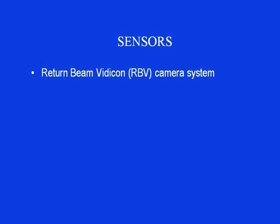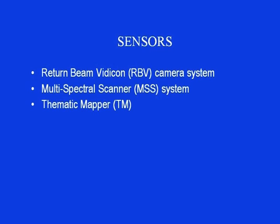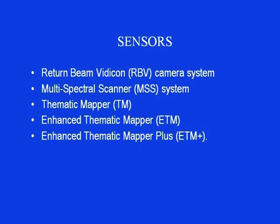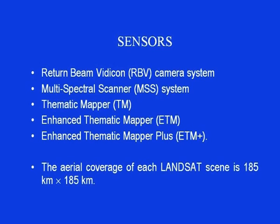The various types of sensors carried by Landsat missions include: Return Beam Vidicon (RBV) camera system, Multispectral Scanner (MSS) system, Thematic Mapper (TM), Enhanced Thematic Mapper (ETM), and Enhanced Thematic Mapper Plus (ETM+). The area coverage of each Landsat scene is approximately 185 kilometers by 185 kilometers.